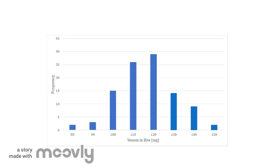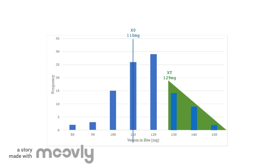The mean and standard deviation values for this original set of data are 110 and 15 respectively. To carry out my selection experiment, I decided to select the top 10% of my current population to be the parents for the next generation.